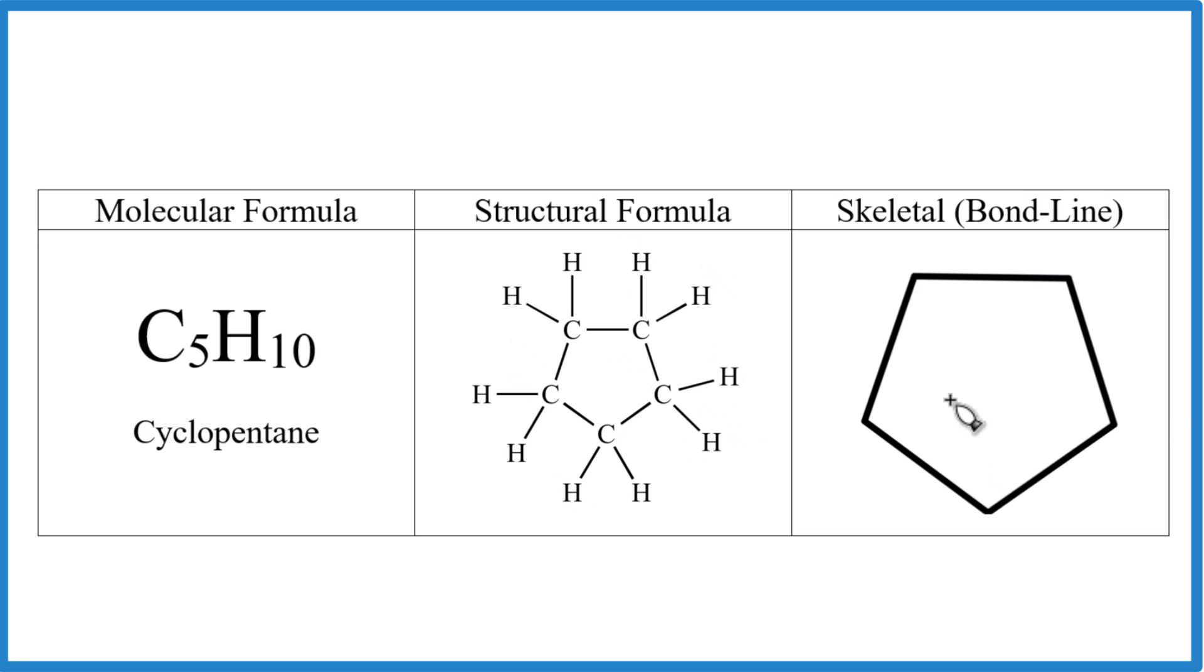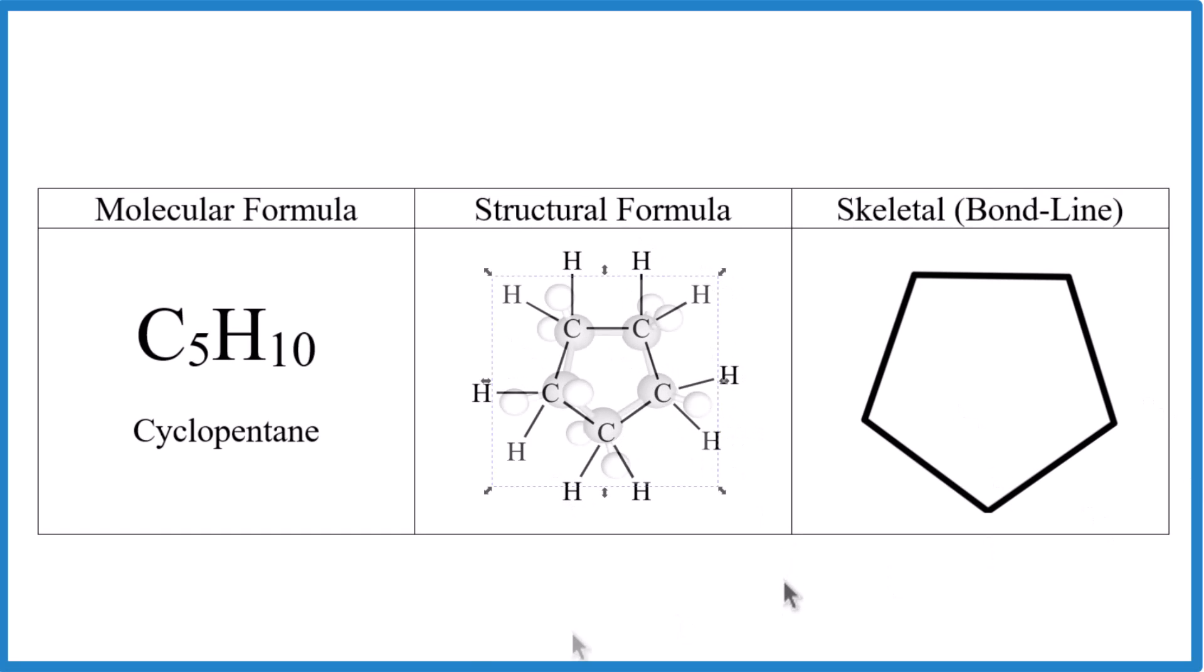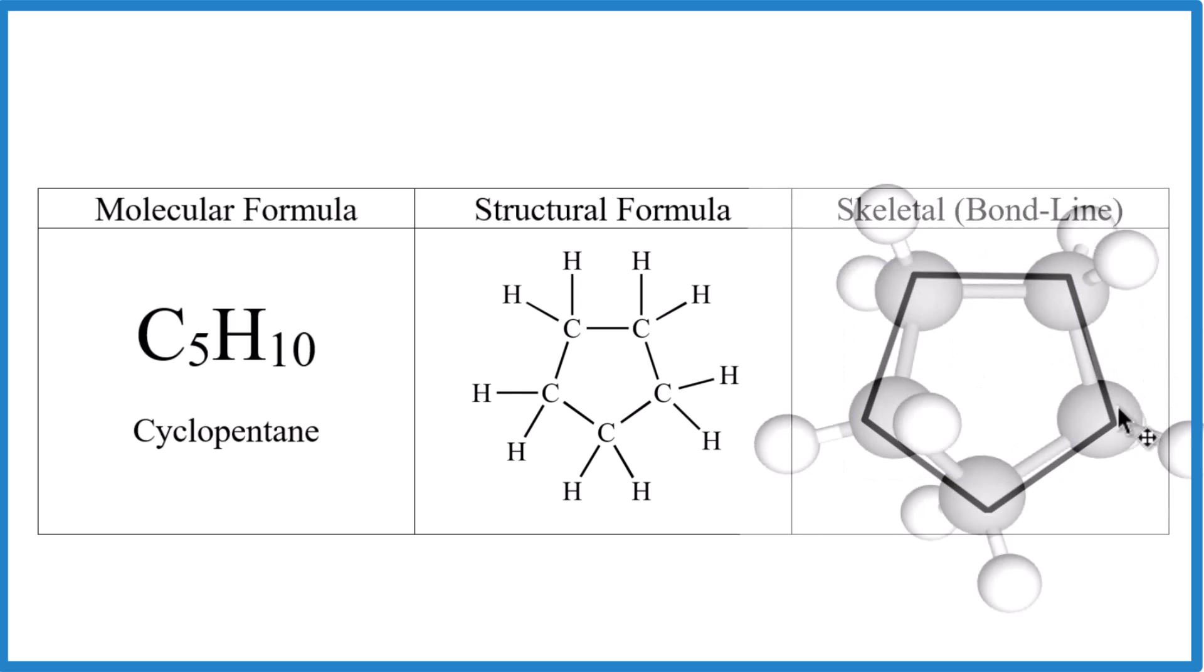Let's lay a molecular model over our structural formula for a second. So you can see we have our carbon atoms. Then each one has two hydrogen atoms. And you can put that over top of here as well and see that same information.